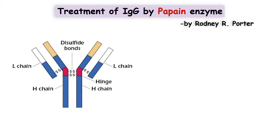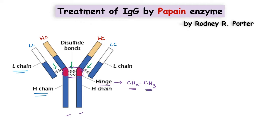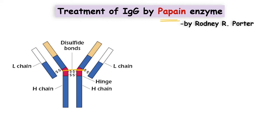Immunoglobulin has two heavy chains and two light chains. There are disulfide bonds between the two heavy chains and also between the heavy and light chains. In the heavy chain there is a flexible amino acid sequence known as the hinge region, present between the CH2 and CH3 domains — that is, between the second and third constant domains of the heavy chain. The cleavage site for Papain is above the disulfide bond present in the hinge region.